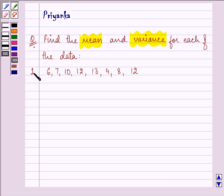Find the mean and variance for each of the following data. Now here, the first data which is given to us is 6, 7, 10, 12, 13, 4, 8 and 12.